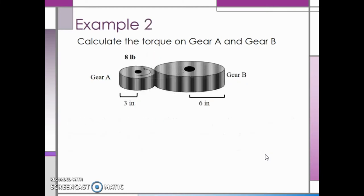In this example, gear A has a smaller radius than gear B. We want to calculate the torque on gear A and gear B, just like in the last example. The force being applied to gear A is 8 pounds. We will assume this is also the same force applied to gear B.